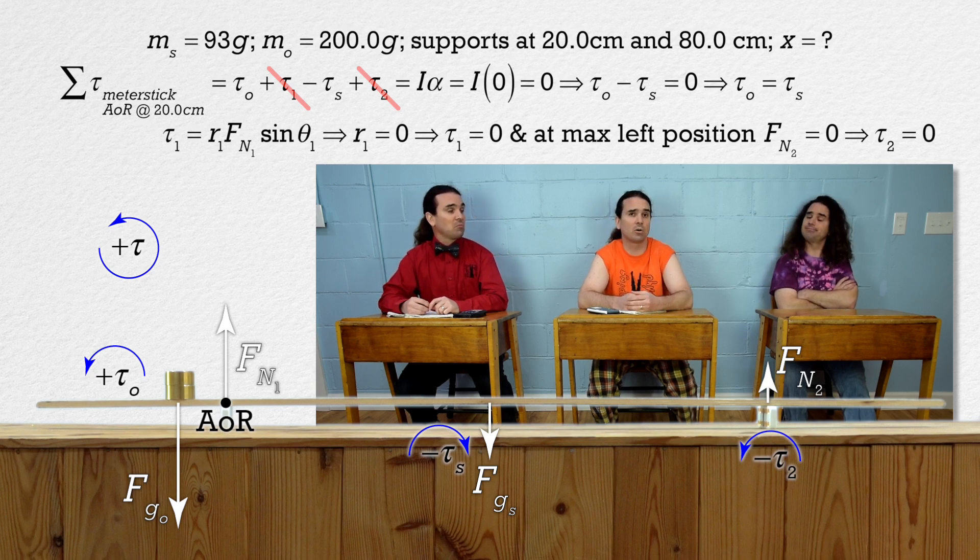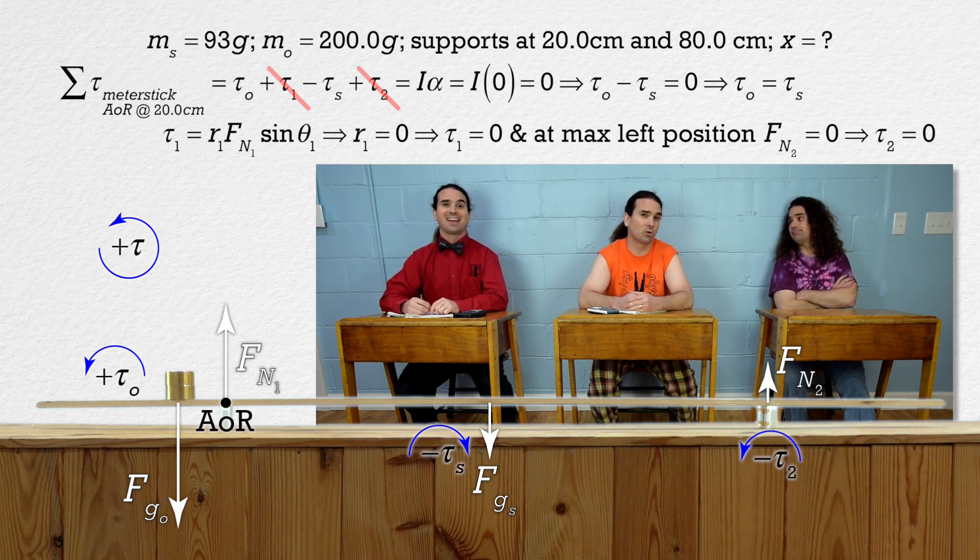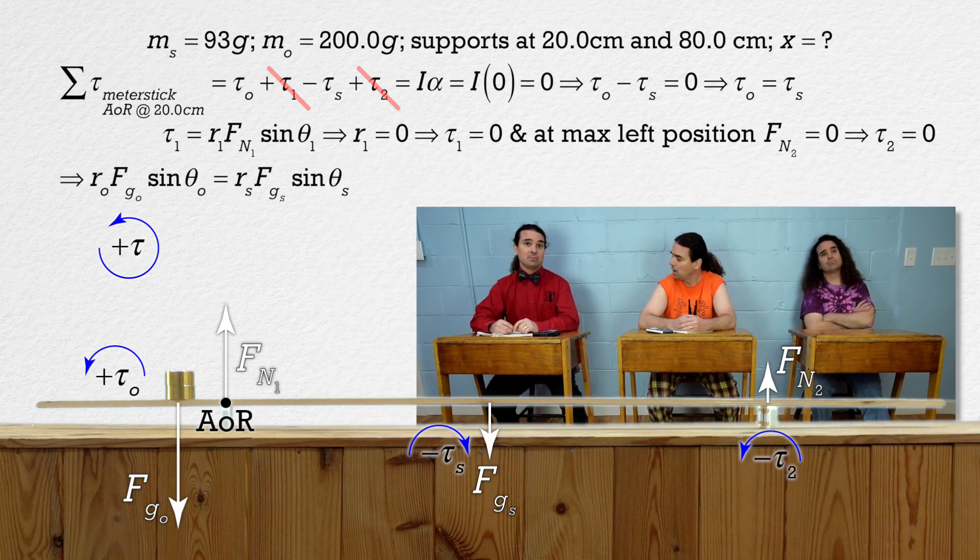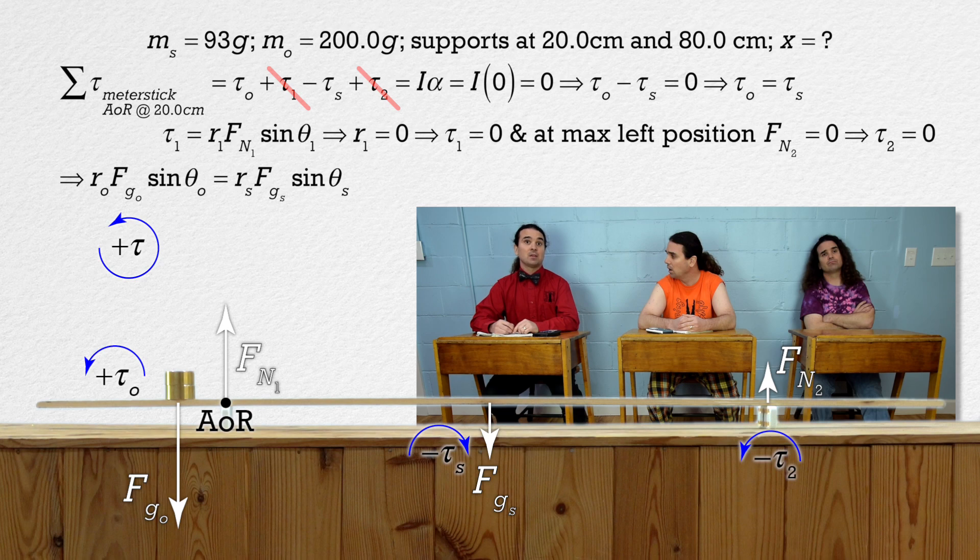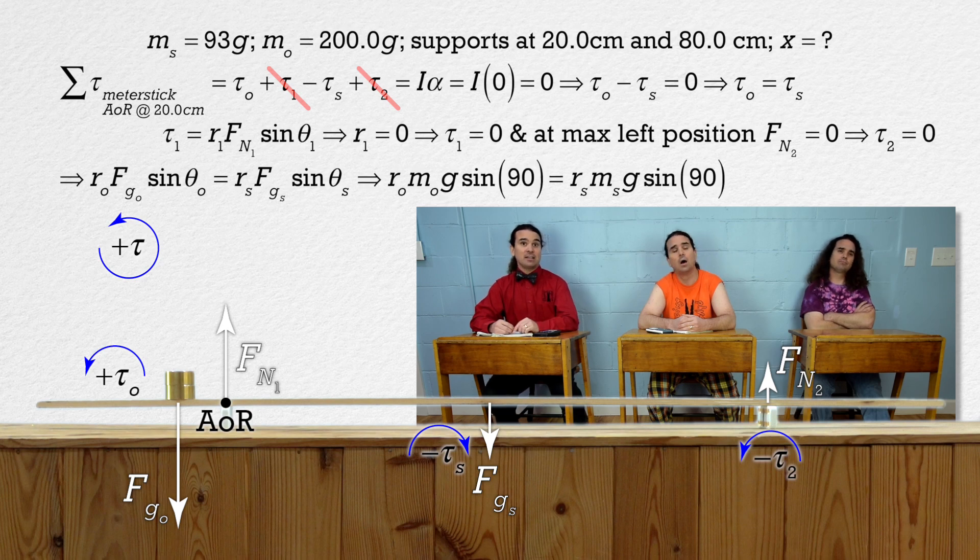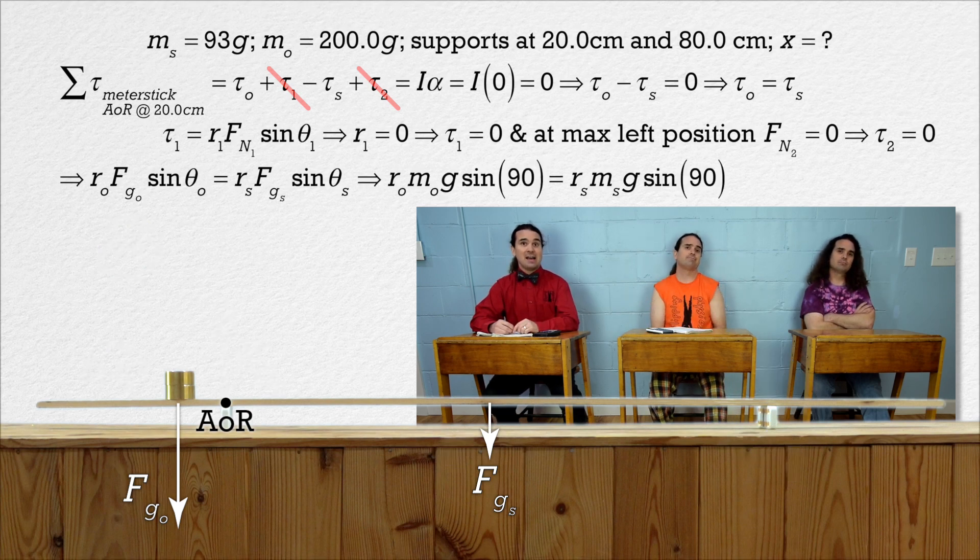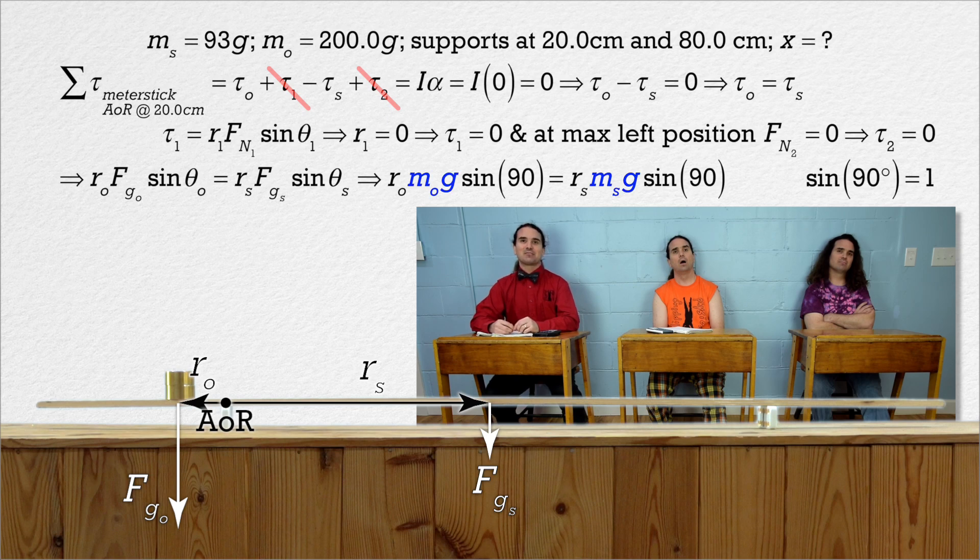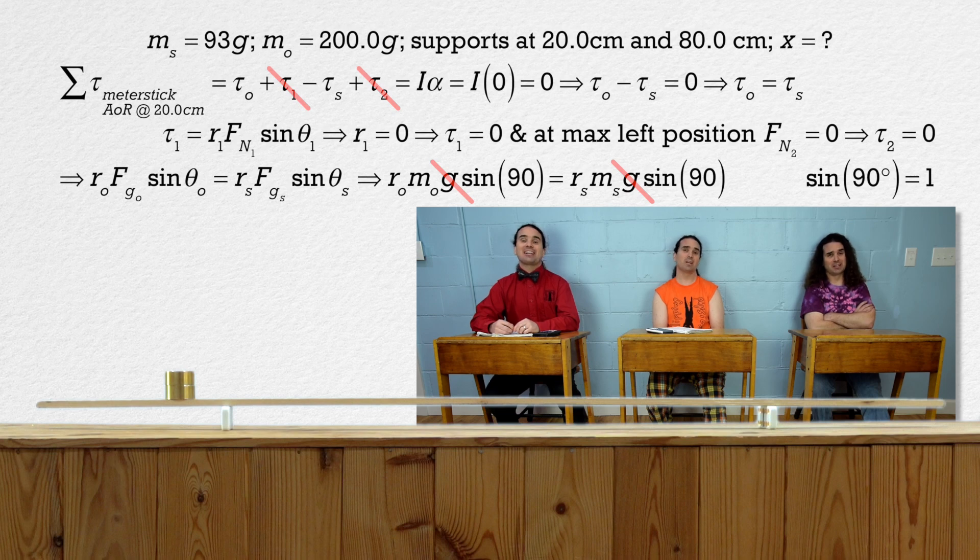Right, so the torque caused by the object equals the torque caused by the meter stick. And we can substitute r times force of gravity times sine of theta for both torques. We know both angles are 90 degrees because both forces of gravity are down and both r values are horizontal. The sine of 90 degrees is 1 and we can substitute m times g for both forces of gravity and everybody brought the acceleration due to gravity to the party.